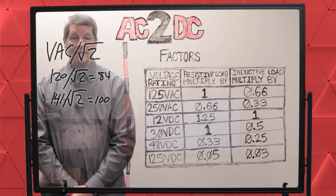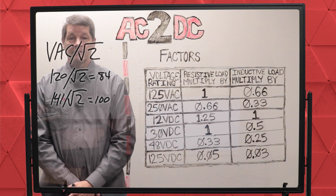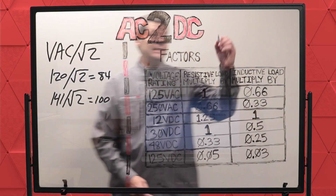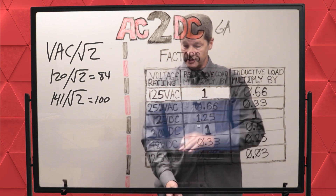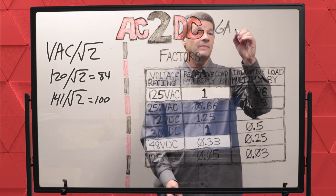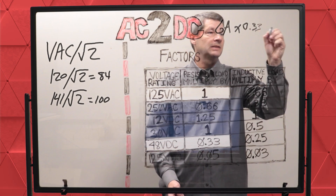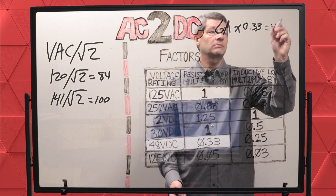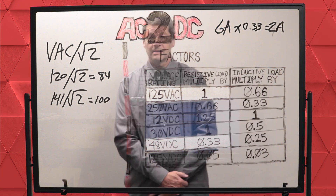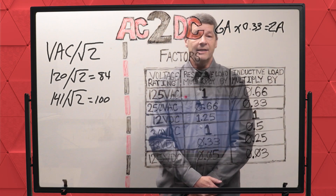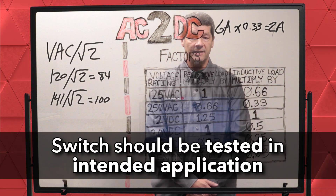The second method of converting AC to DC voltage is with the following factors in this chart. For example, if you have a switch rated for 6 amps at 125 volts AC and you want to use it at 48 volts DC, you would multiply it by 0.33, yielding 2 amps for your 48 volt DC circuit. Again, this is a mathematical re-rating and not tested data. The switch should be tested in the application in which it's intended to be used.